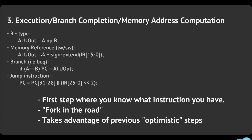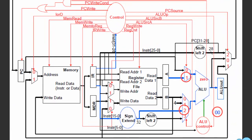For example, if you're adding 16 to register 8, you take your current register value and add the sign-extended immediate — this gives you the new memory address, which you put into ALU out. So if this was a load word or store word, you now have the target memory address stored in ALU out.